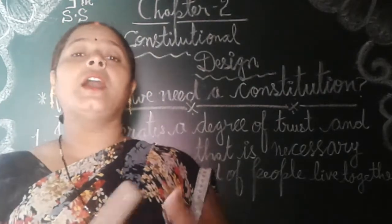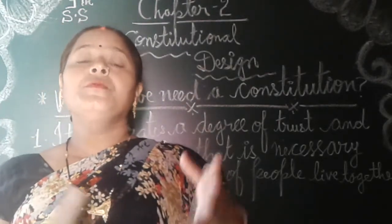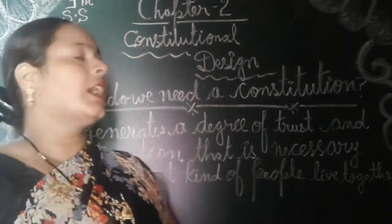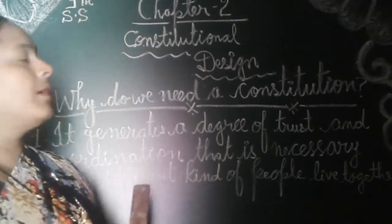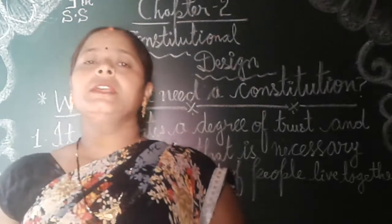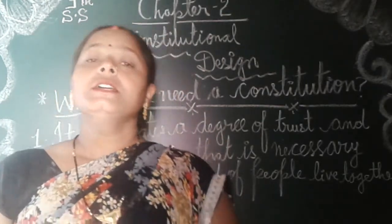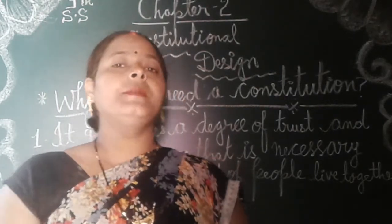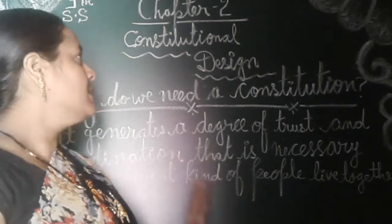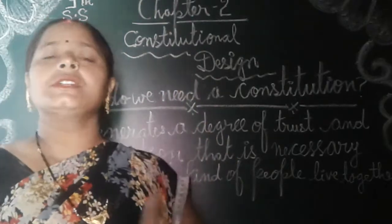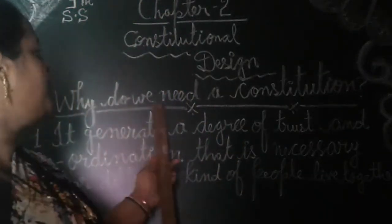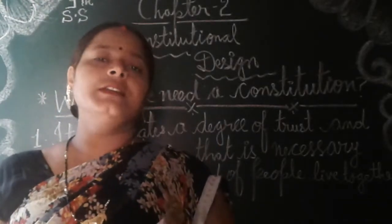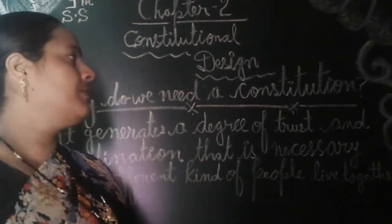Constitutional Design covers what things are included for making rules and regulations. In this chapter, the beginning portion about South Africa and Nelson Mandela has been deleted from the curriculum this year. So we will start from where it asks: why do we need a constitution — meaning what is the importance and necessity of constitution.